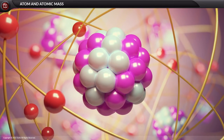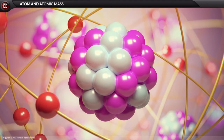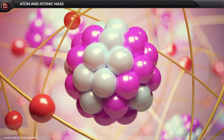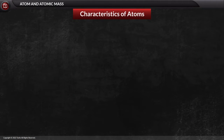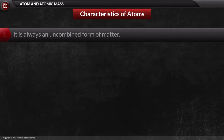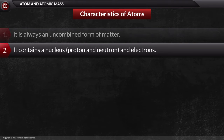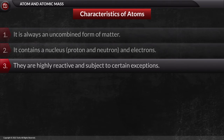Now that we are clear with the structure of the atom, let us see the characteristics of the atom. It is always in an uncombined form of matter. It contains a nucleus and electrons. Atoms are highly reactive and are subject to certain exceptions.